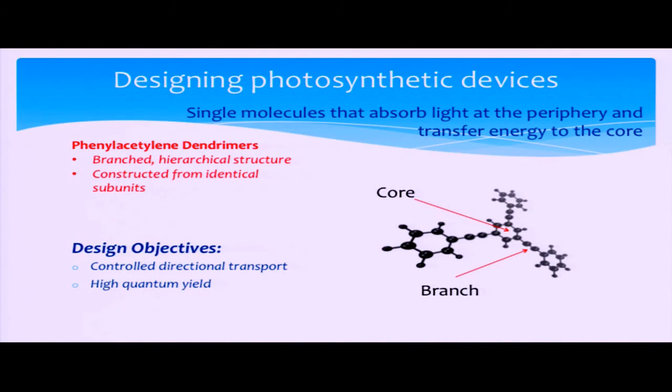We've actually identified a set of molecules, which I've shown here, known as phenylacetylene dendrimers. In general, these molecules are described by a hierarchical tree-like structure, where light absorption occurs at the periphery, and energy is funneled toward a localized core.